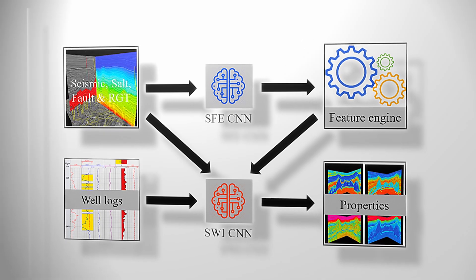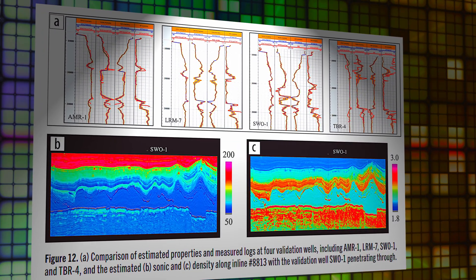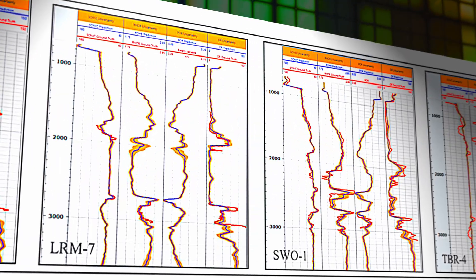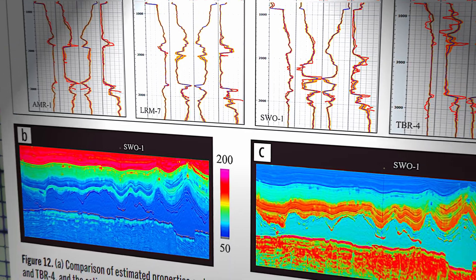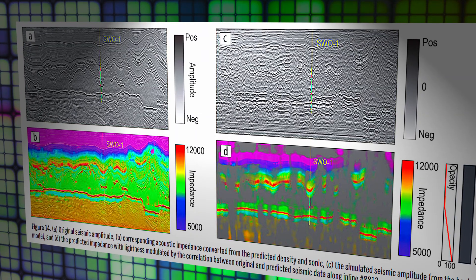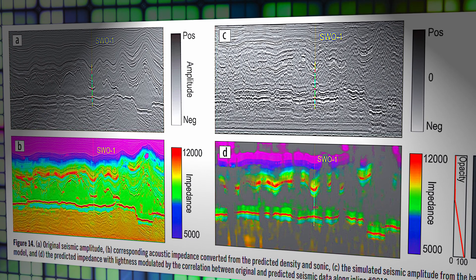Here are the property estimation results. The average correlation between the original and predicted data at various well locations is about 0.6. They observe high correlation in simpler structures and low correlation in more complex areas.